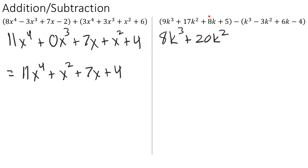For the 8k term here, we have a 6k term that is like terms with it in the second polynomial, so 8k minus 6k gives us plus 2k. And then lastly, we have the constants. Positive 5 minus negative 4 combines to be positive 9.